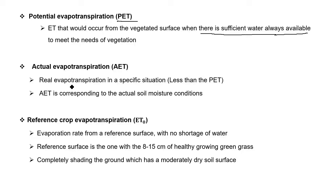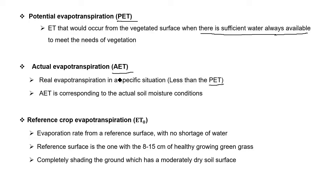In many conditions, sometimes in a dry situation, there is lesser moisture available in the soil to meet the needs of the crop or vegetation. In that case, the evapotranspiration that occurs is called actual evapotranspiration, which is less than potential evapotranspiration.